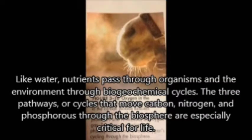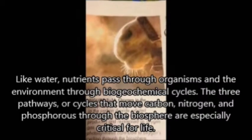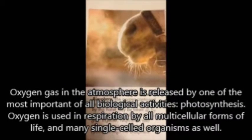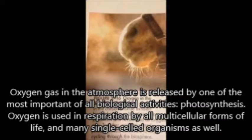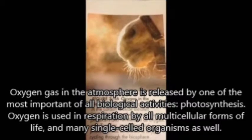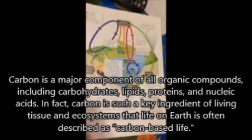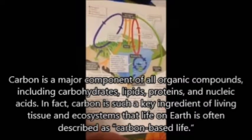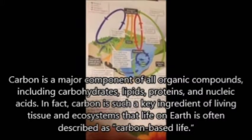The three pathways or cycles that move carbon, nitrogen and phosphorus through the biosphere are especially critical for life. Oxygen gas in the atmosphere is released by one of the most important biological activities: photosynthesis. Oxygen is used in respiration by all multicellular forms of life and many single-cellular organisms as well. Carbon is a major component of all organic compounds, including carbohydrates, lipids, proteins and nucleic acids. Carbon is such a key ingredient of living tissue that life on Earth is often described as carbon-based life.